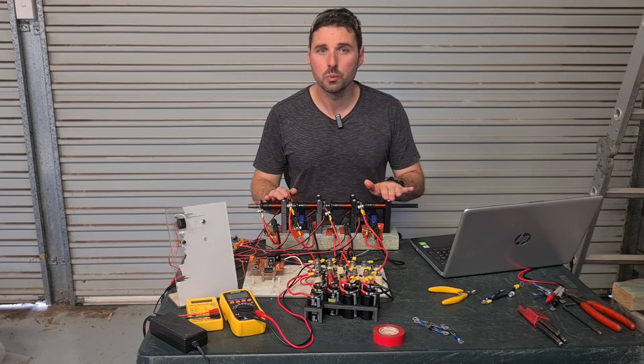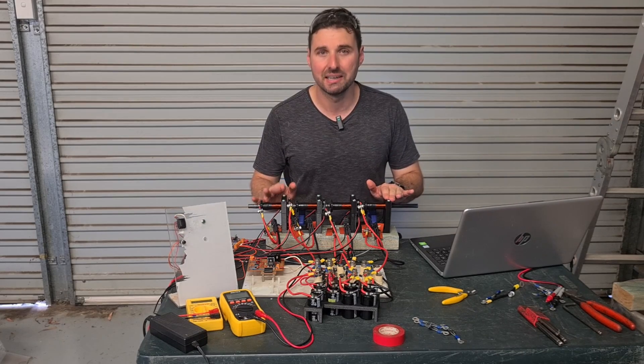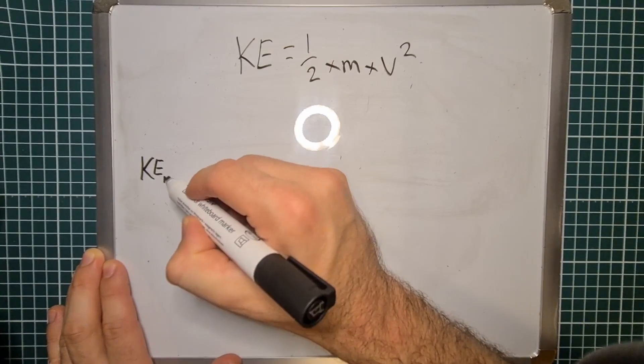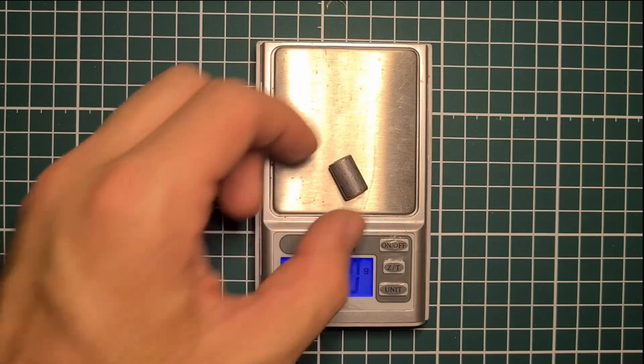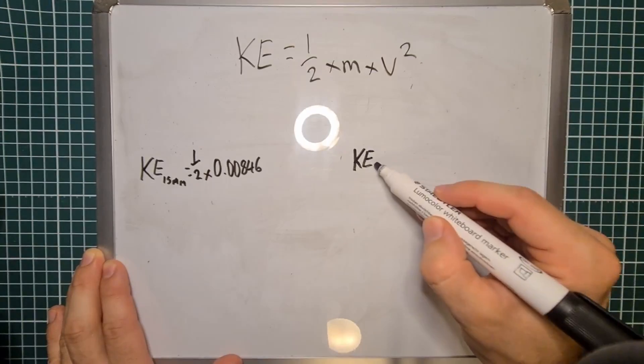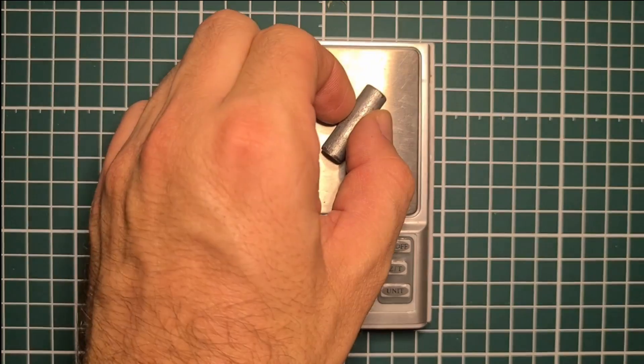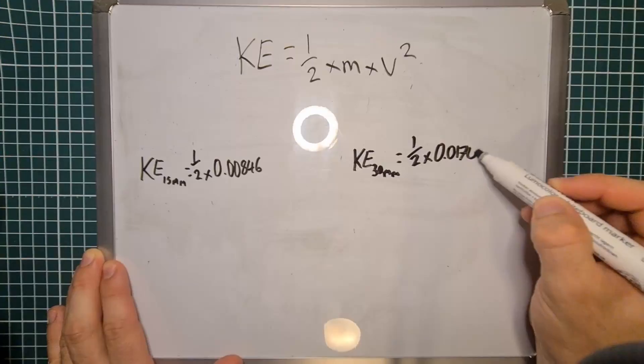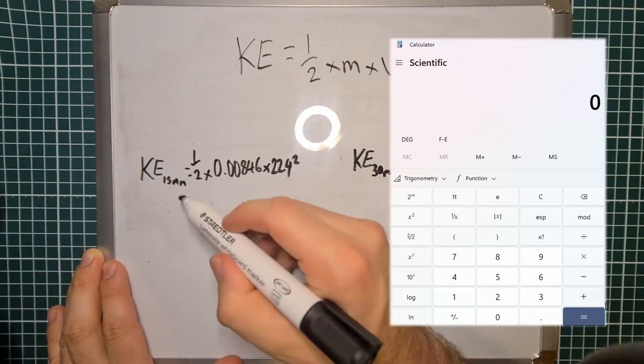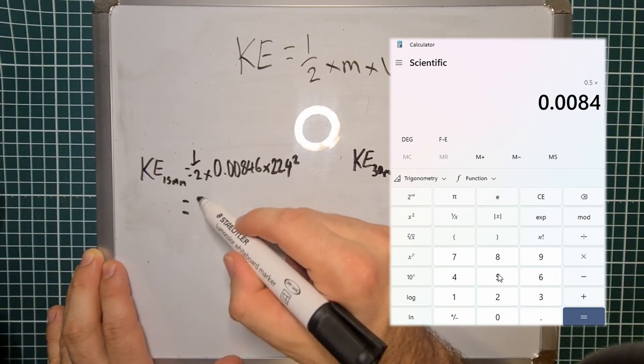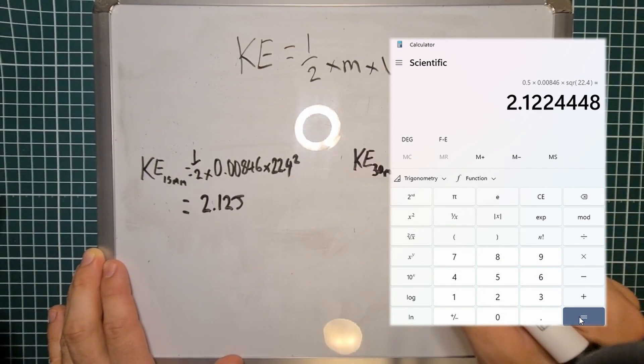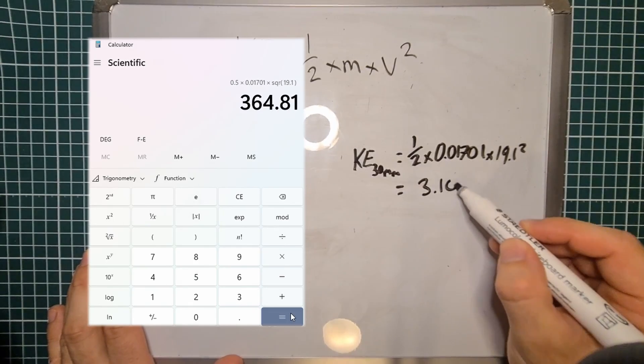Now using these results we can calculate the projectile's kinetic energy. To do that using the kinetic energy formula, we multiply half by the mass, in the case of the 15 millimeter projectile is 8.46 grams and the 30 millimeter is 17.01 grams. Then all that multiplied by the velocity squared. When we calculate that, we end up with the kinetic energy of 2.12 joules for the 15 millimeter and 3.1 joules for the 30 millimeter.